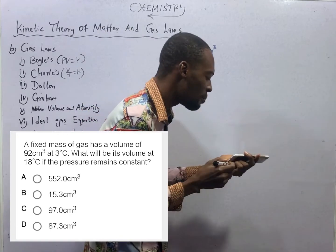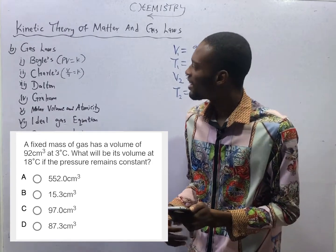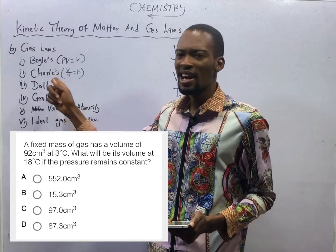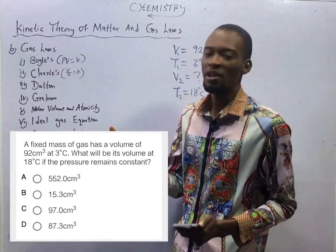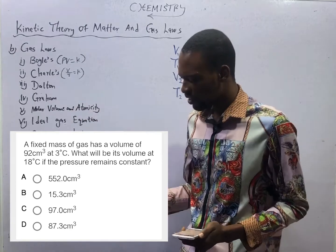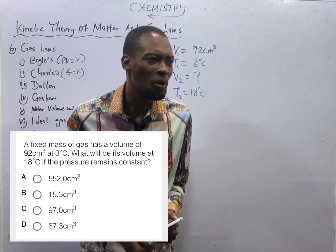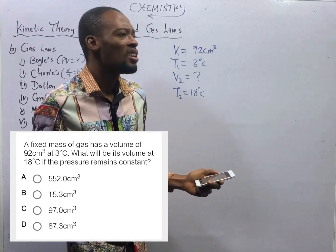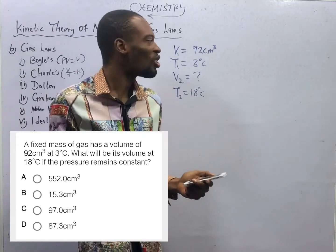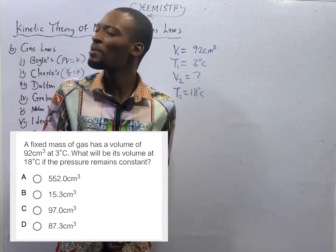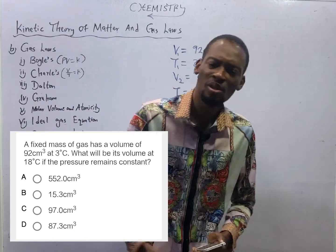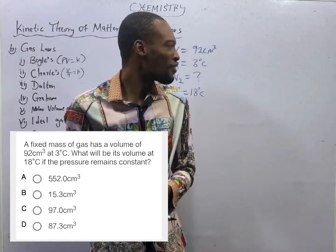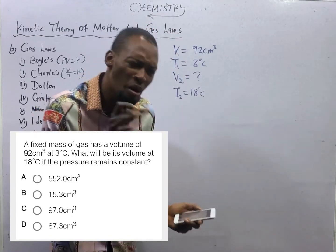If the pressure remains constant — anytime we are told that pressure remains constant, we are dealing with Charles' Law. And when we are comparing volume and temperature, V over T, we are dealing with Charles' Law. These are things you should know to be successful in gas law calculations. Anytime you are solving under gas law, your temperature can never be in degrees Celsius. You must not solve with degrees. If you are given temperatures in degrees, convert to Kelvin.